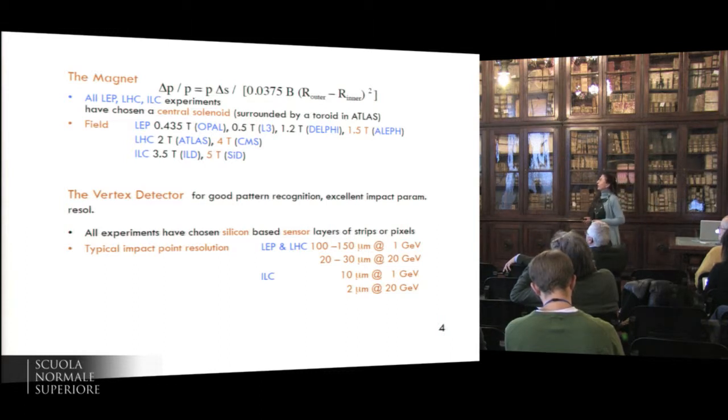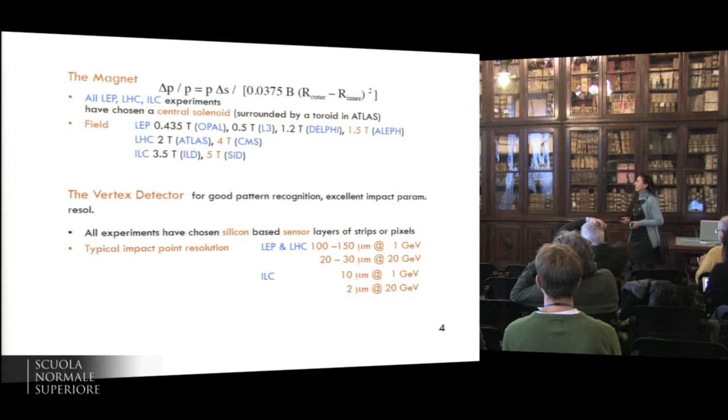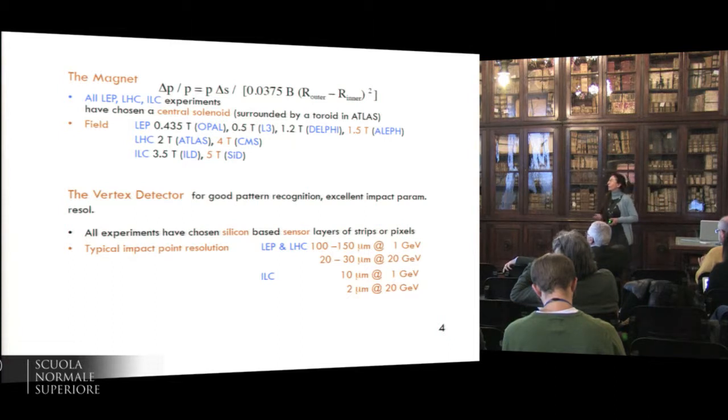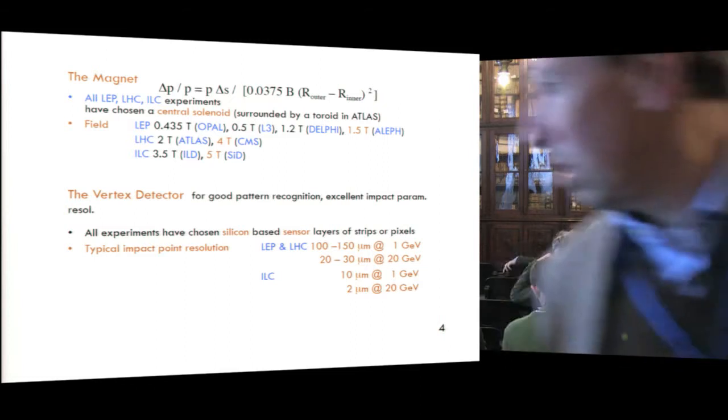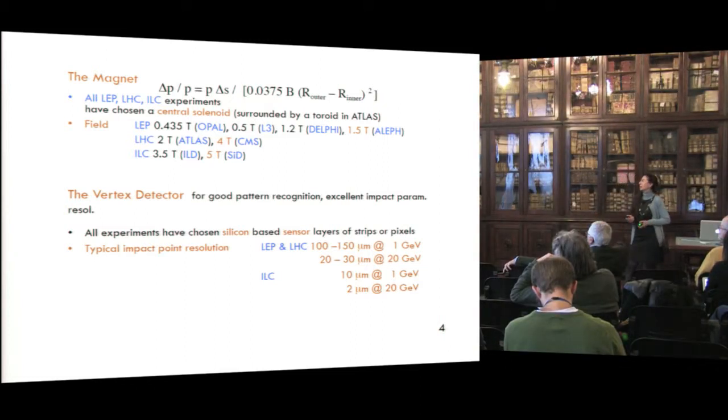For the magnet, all the experiments have chosen the central solenoidal field that ranges from half a Tesla to 1.5 Tesla for LEP, from 2 to 4 Tesla for the LHC experiments, and the ILC from 3.5 to 5 Tesla. The vertex detector for good pattern recognition and excellent impact parameter resolution, all the experiments have chosen silicon-based sensor layers of strips or pixels. A typical impact point resolution quoted by the LEP and LHC experiments ranges from 100 to 150 microns at 1 GeV, 10 to 30 microns at 20 GeV, and the ILC expects to gain a factor of 10 on this precision.